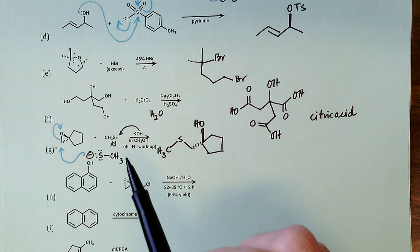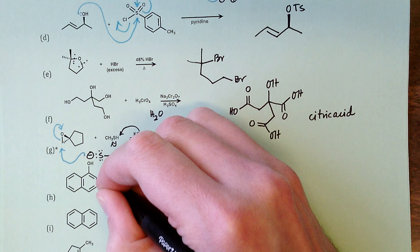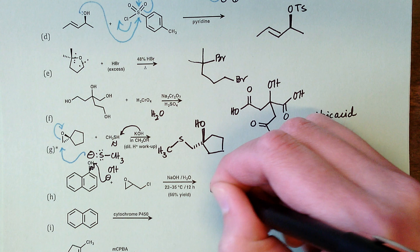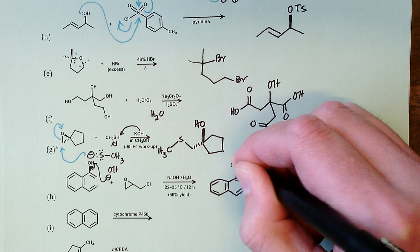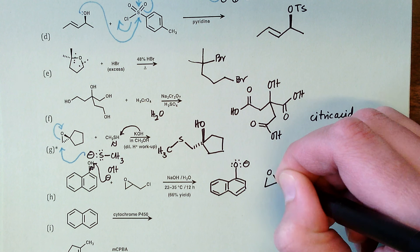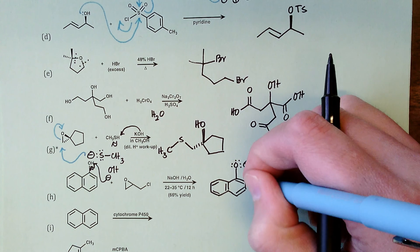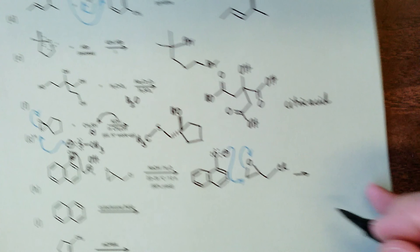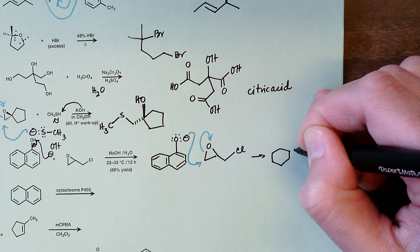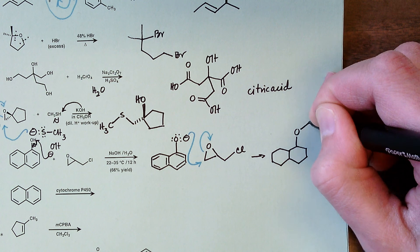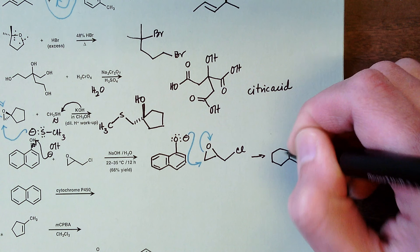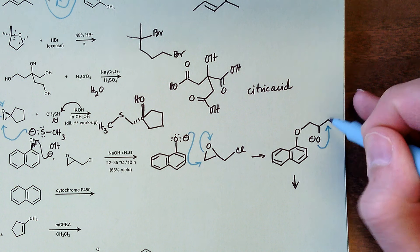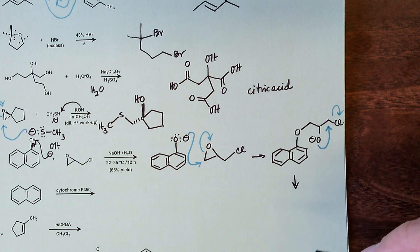Part h, similar to g: the first step is an acid-base reaction — hydroxide pulls off the acidic proton from alpha-naphthol to generate a phenoxide nucleophile. This phenoxide reacts with epichlorohydrin: the negatively charged oxygen attacks the less sterically hindered carbon of epichlorohydrin, forming a new oxygen-carbon bond. This intermediate quickly undergoes intramolecular substitution, where the generated alkoxide swings down to form an epoxide with concomitant loss of chloride ion, in 66% yield.